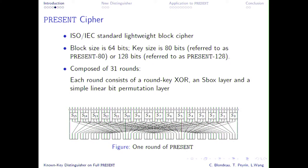PRESENT has 31 rounds of a very simple and elegant round structure. We just XOR a sub-key, then apply 16 parallel applications of a 4-bit S-box — it's the same S-box but labeled to be able to talk about individual bits. Then we have a permutation which looks a bit irregular but has a very simple expression. You just have this round function, iterate it 31 times, and this gives you the cipher.